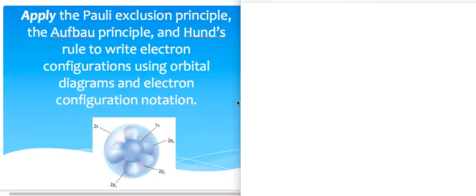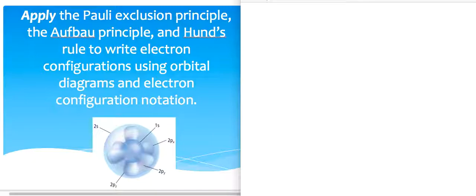This video is to help you with electron configuration and orbital diagrams. To get started, there are three rules that govern electron configuration — in other words, the order that electrons go into the atom. I normally don't test on the names of these rules, but really focus on understanding what they mean and how they work.